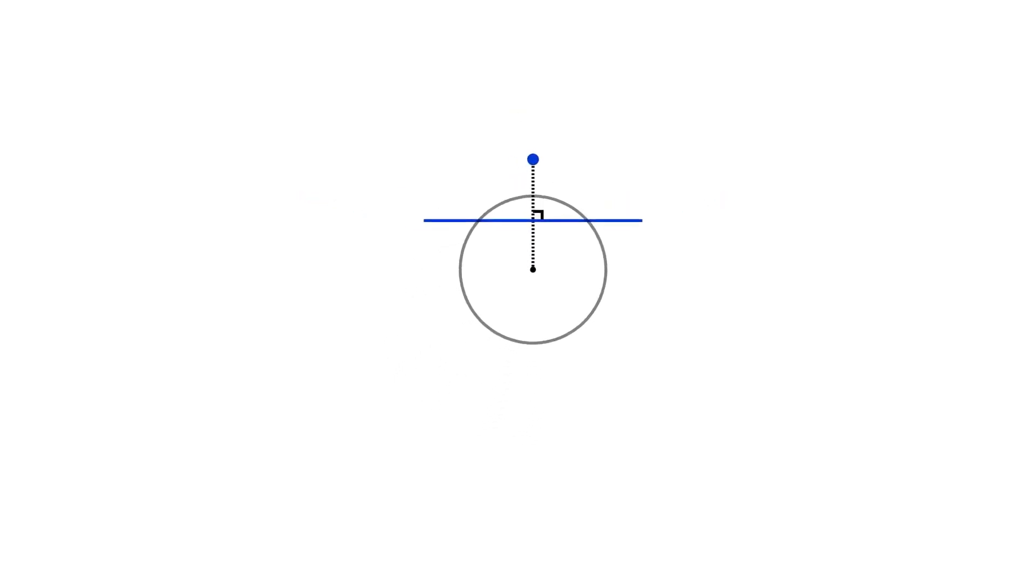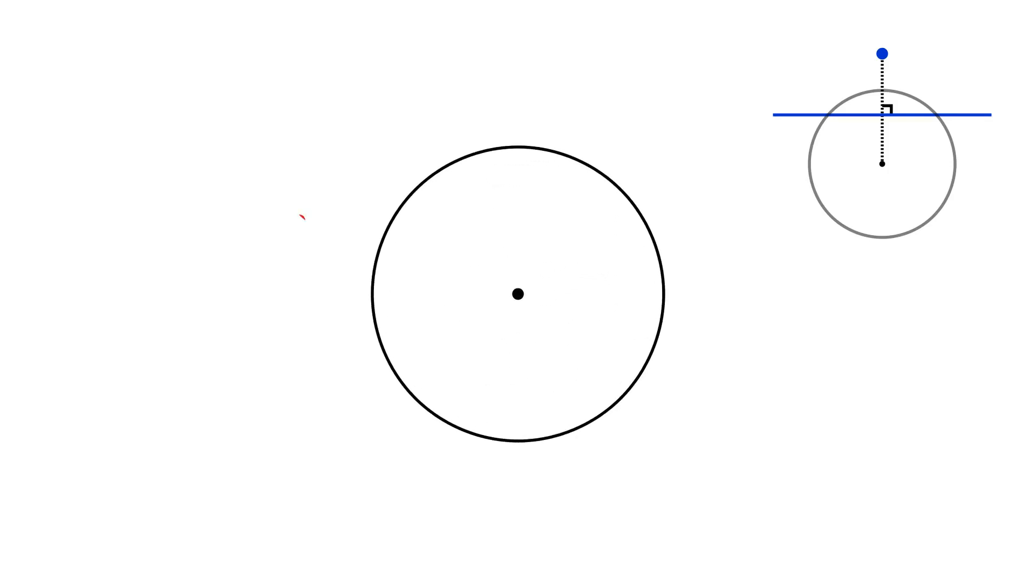It turns out that this point-line correspondence has several lovely properties. Most importantly, if the red point lies on a blue line, then the blue point lies on a red line.